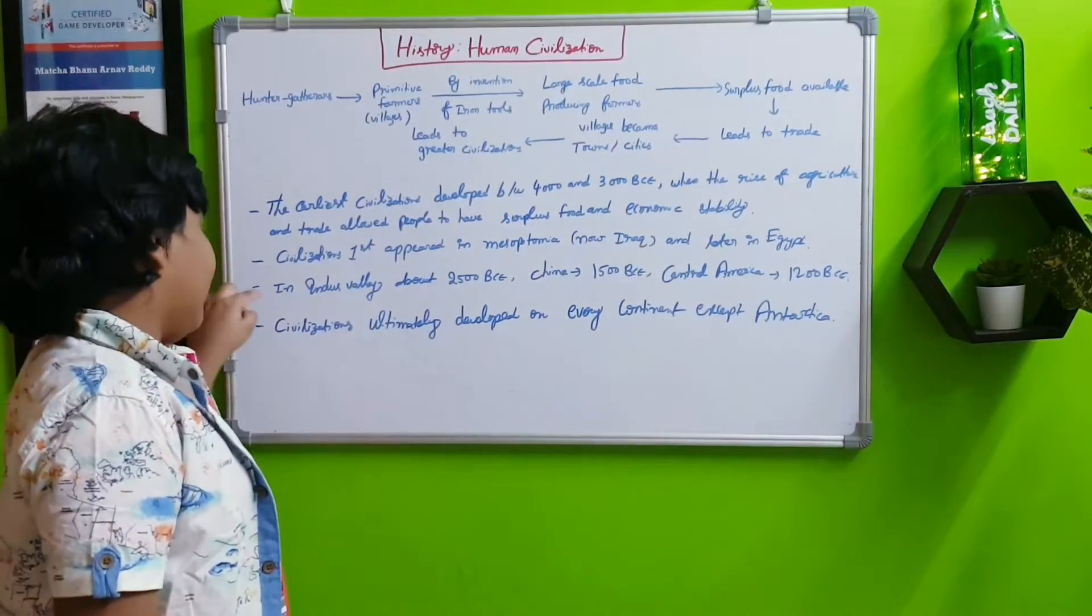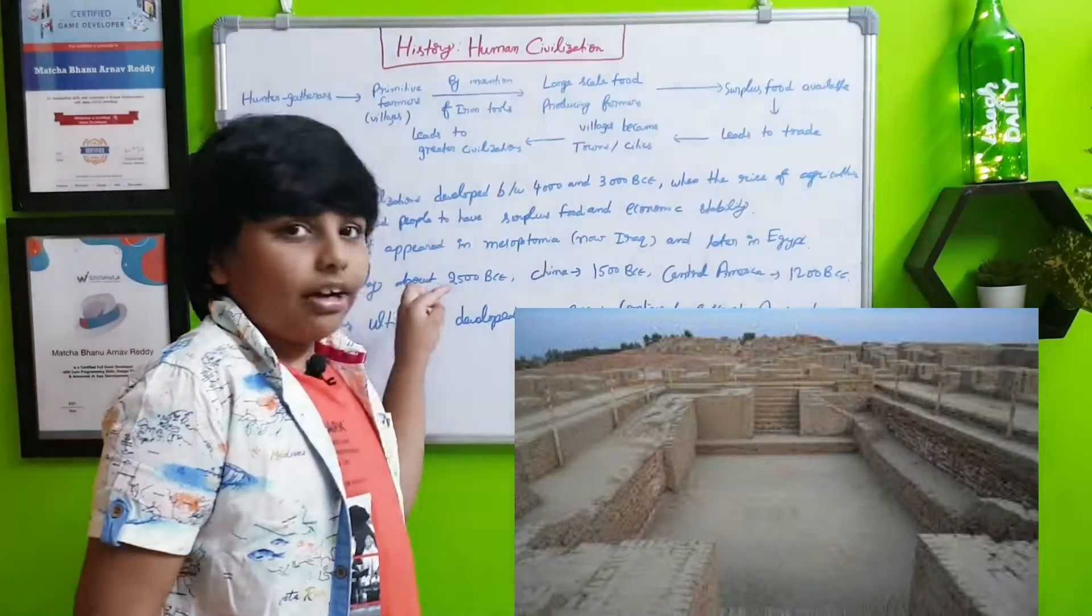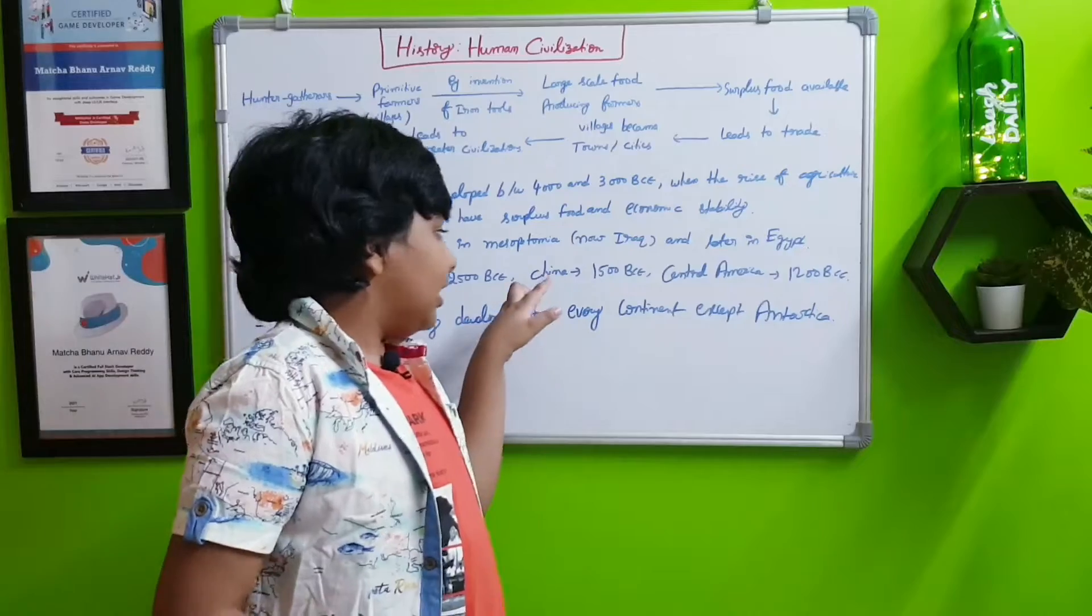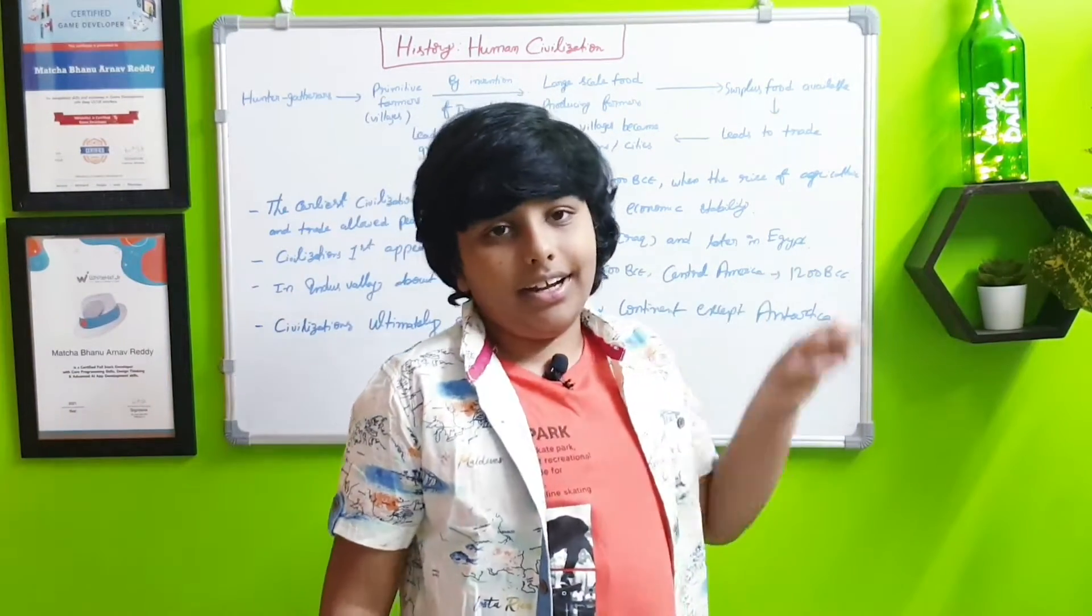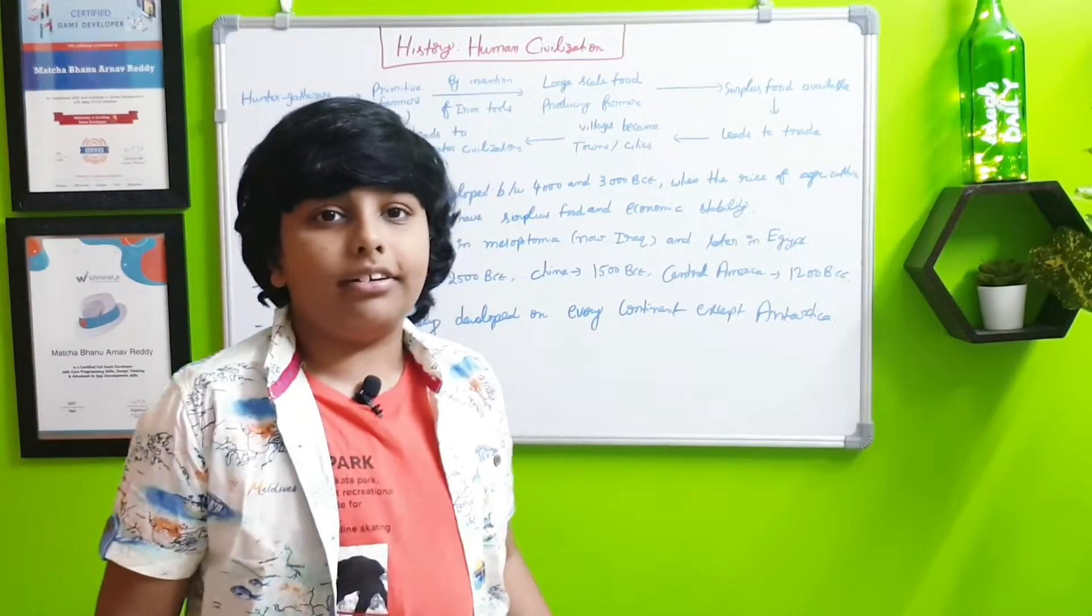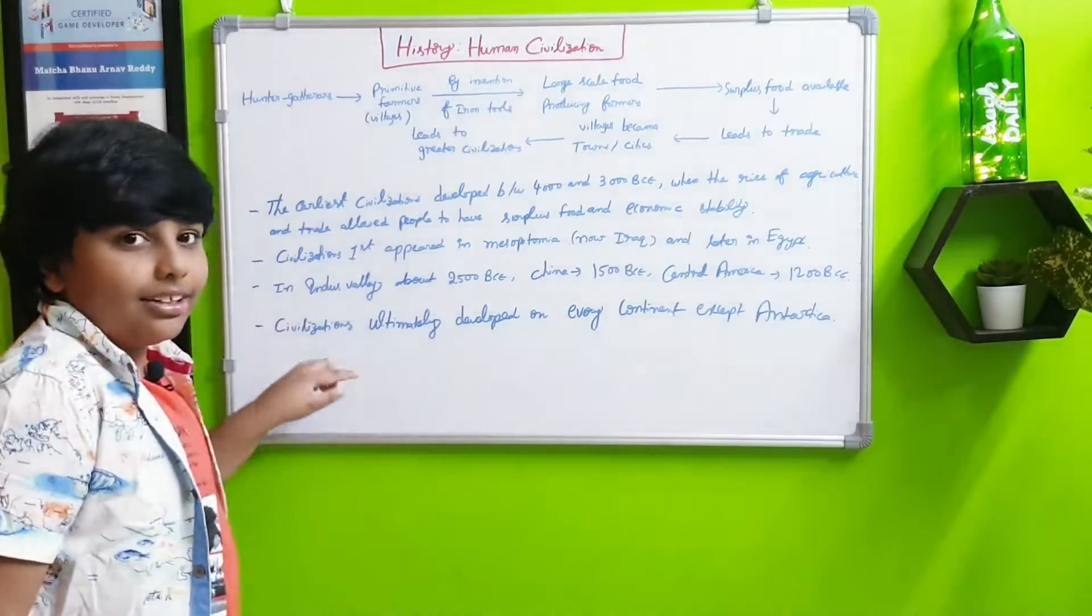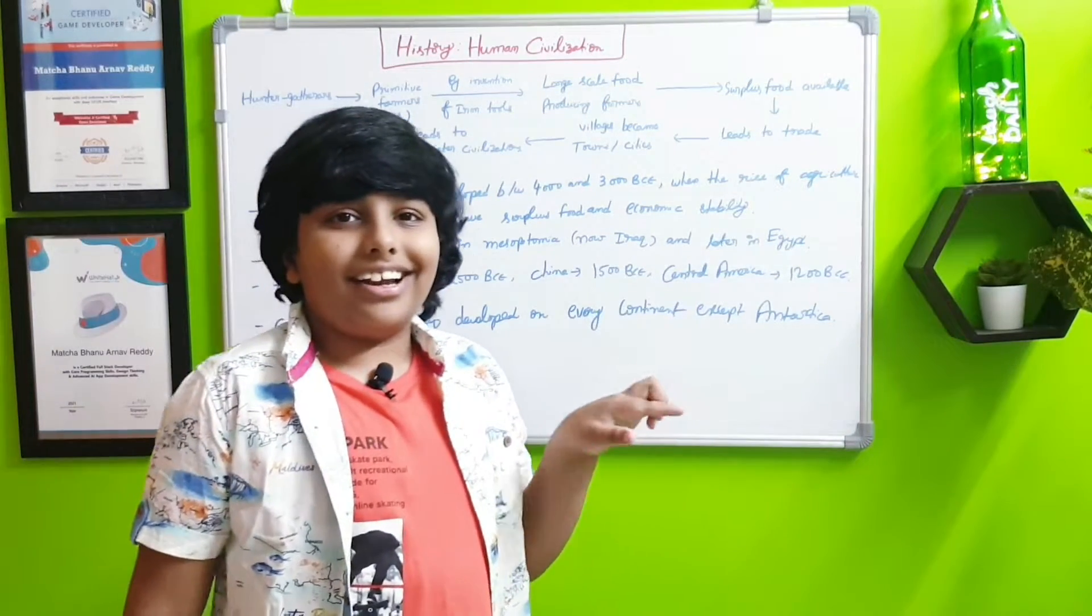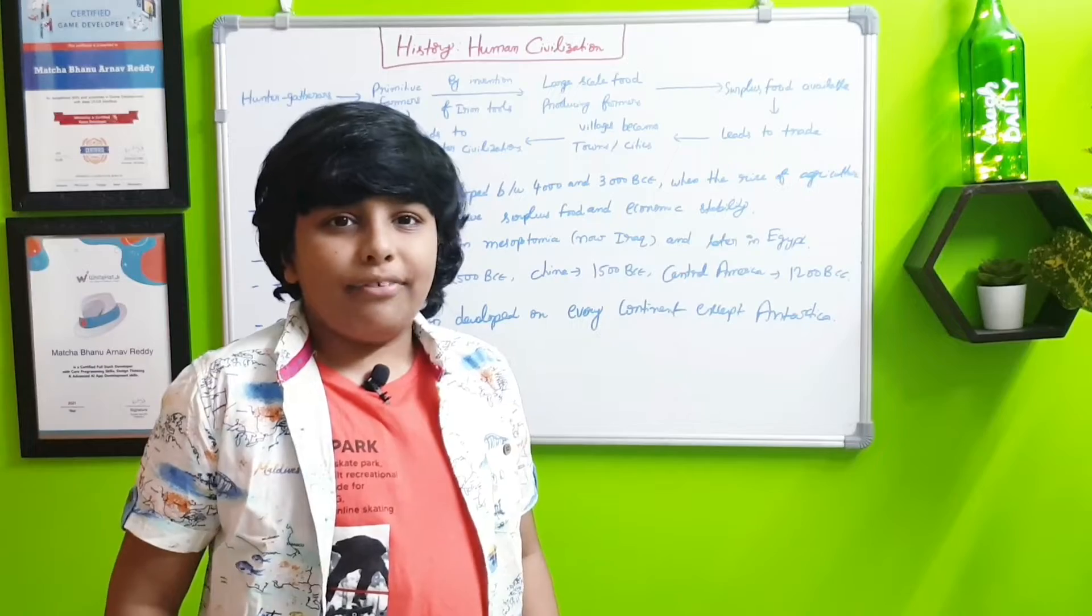The Indus Valley civilization was created about 2500 BCE, China in 1500 BCE, Central and South America, the Aztec Empire or others which stayed there. The civilizations ultimately developed on every continent except Antarctica. Who can live in that cold frozen wasteland?